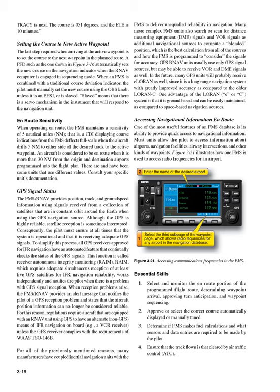In the future, many GPS units will probably receive LORAN as well, since it is a long-range navigation system with greatly improved accuracy as compared to the older LORAN-C. One advantage of the LORAN — E or C — system is that it is ground-based and can be easily maintained, as compared to space-based navigation sources. Accessing navigational information en route: one of the most useful features of an FMS database is its ability to provide quick access to navigational information.